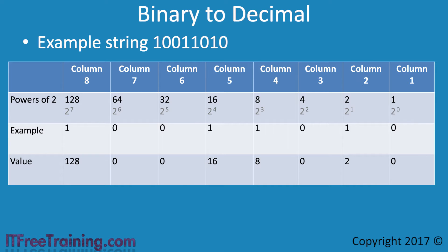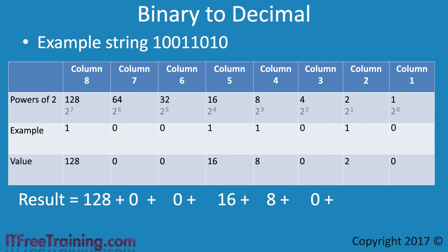Now that all the values have been worked out, the next step is to add them together to get the result. Column 8 is 128, columns 7 and 6 are 0, column 5 is 16, column 4 is 8, column 3 is 0, column 2 is 2 and column 1 is 0. Adding all these values together gives a final value of 154, so the example binary string represents the decimal number 154. If you are given a binary string, it is a simple matter to follow this procedure to convert it to a decimal.